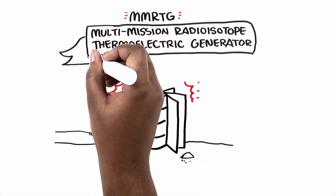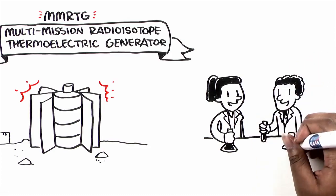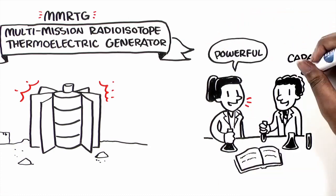MMRTGs are reliable and last a long time. NASA's Jet Propulsion Laboratory is working with the Department of Energy on ways to make them even more powerful and capable.